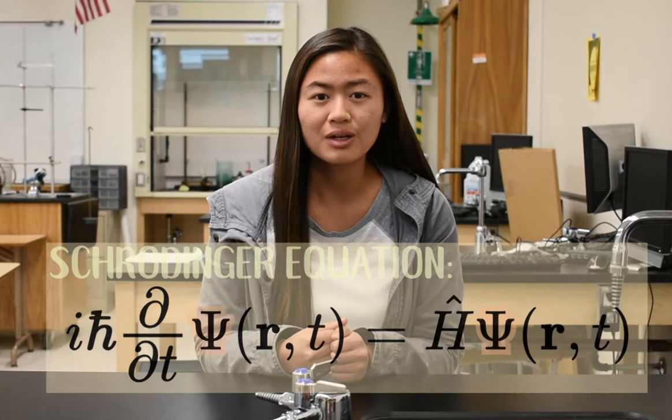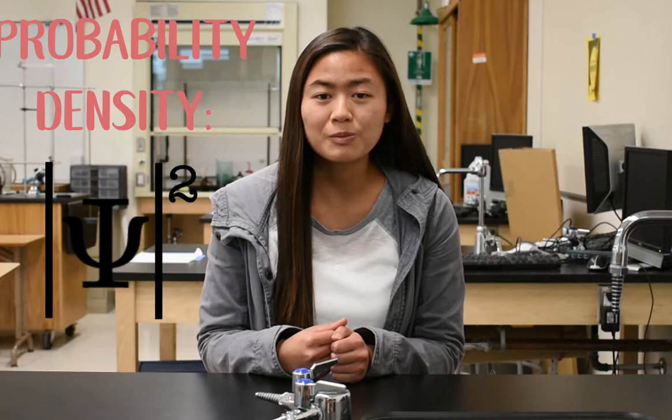The behavior of these matter waves is described by the Schrödinger equation. The solutions of this equation, called wave functions, can be used to find a particle's probability density, or its probability of being detected within a given volume at a certain time.